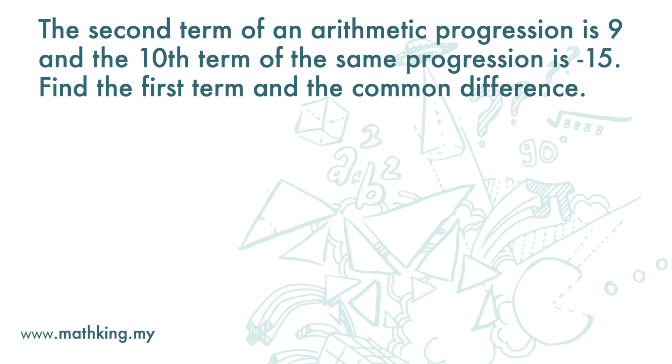Let's write down the equation for these two terms. The second term is 9, so we get 9 equals a plus 2 minus 1 times d. And the tenth term is negative 15, so we get negative 15 equals a plus 10 minus 1 times d.